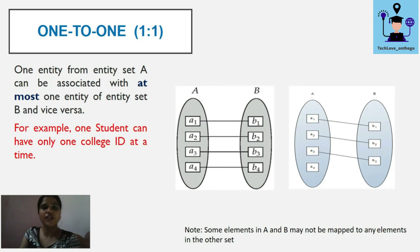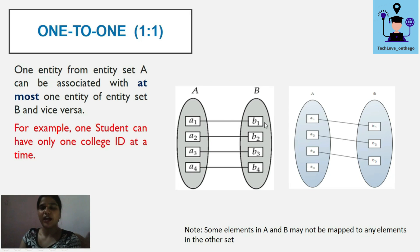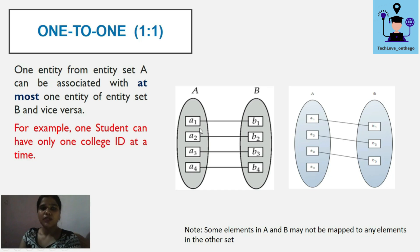One-to-one mapping means one entity from entity set A can be associated with at most one entity of entity set B, and vice versa. Entities in A are connected to entities in B, but each entity is connected to only one entity in the other set. It may be possible that some entities are not connected to any other entity — that is acceptable.